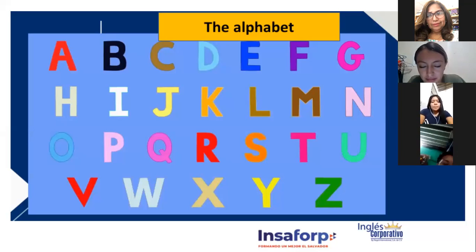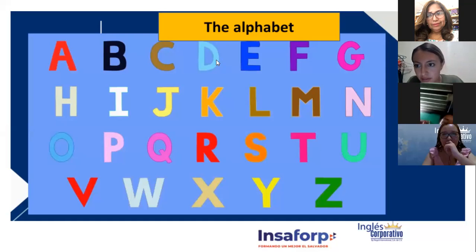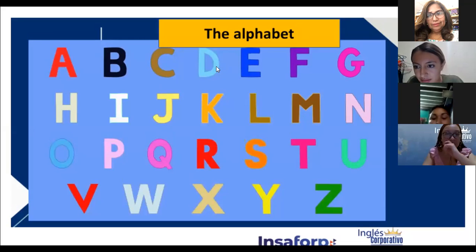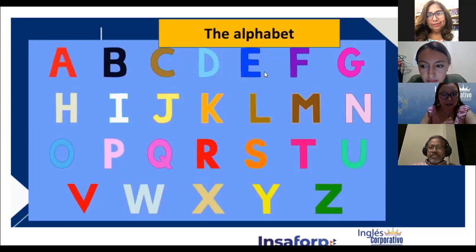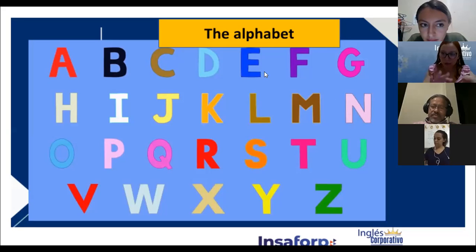Ahora vamos a ir un poquito más afuera de la zona de confort, porque de eso se trata hablar inglés — que se nos vaya quitando la pena. ¿Y cómo se nos va a quitar? Cometiendo errores, corrigiéndolos y haciéndolo bien. So, ¿qué vamos a hacer ahorita? Yo les voy a dar uno de mis nombres para que lo deletreen. No van a deletrear el suyo, porque ese ya se lo saben — van a deletrear el de alguien más.